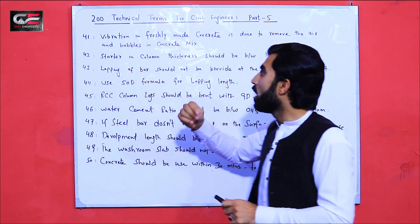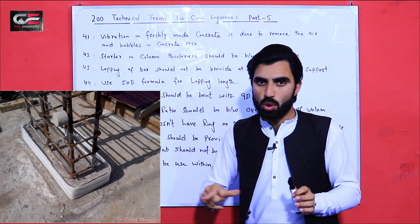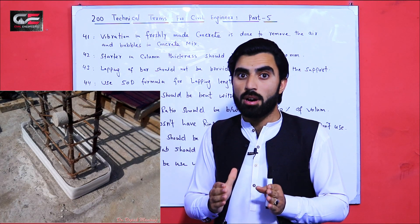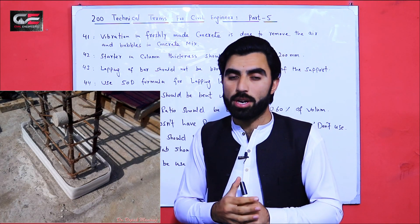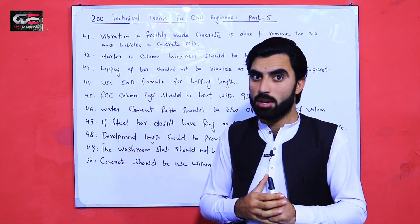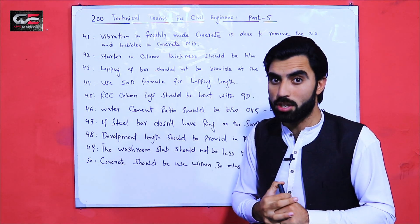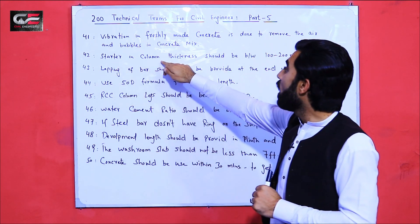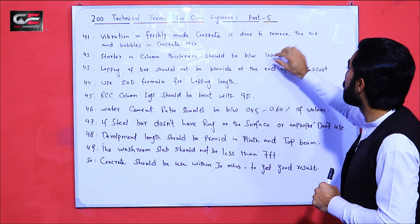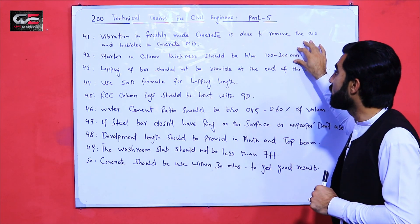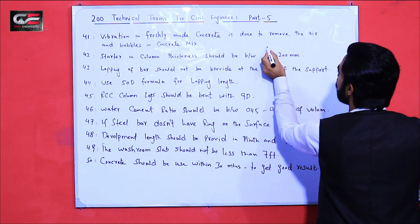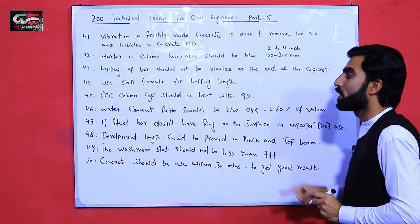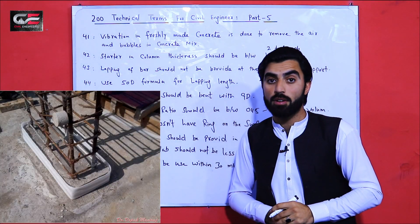Term number 42 is related to the RCC column starter and column thickness. We provide a starter at the base of an RCC column, on which we fix the formwork or shuttering of the column. This gives a good result. The starter and column thickness should be between 100 to 200 mm, or 2 to 4 inches. You can see the picture showing an example of a starter.